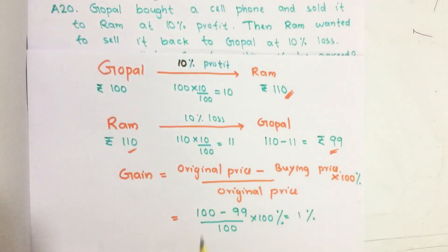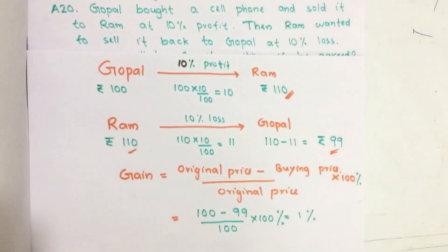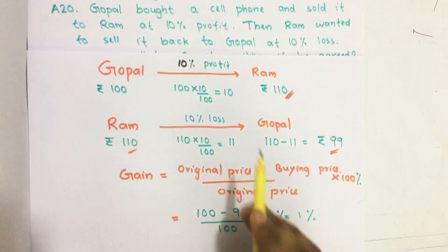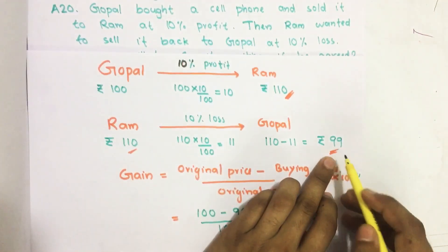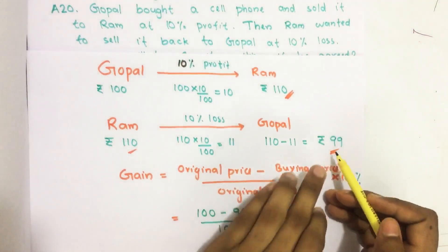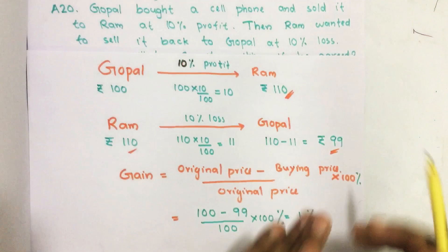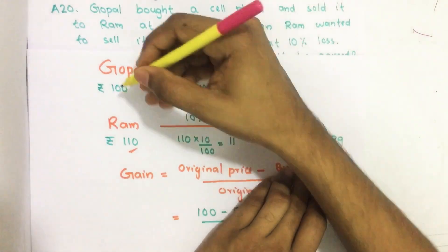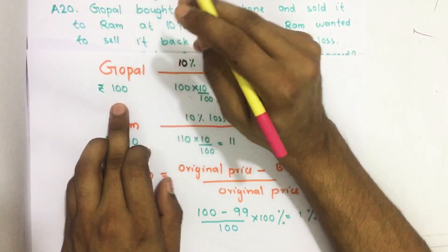If Gawbal wants to buy from the wholesaler it costs Rs. 100, but when he buys it from Ram at 10% loss he gets it at Rs. 99. That means he is gaining 1 rupee here, and this 1 rupee is 1% of the original price.